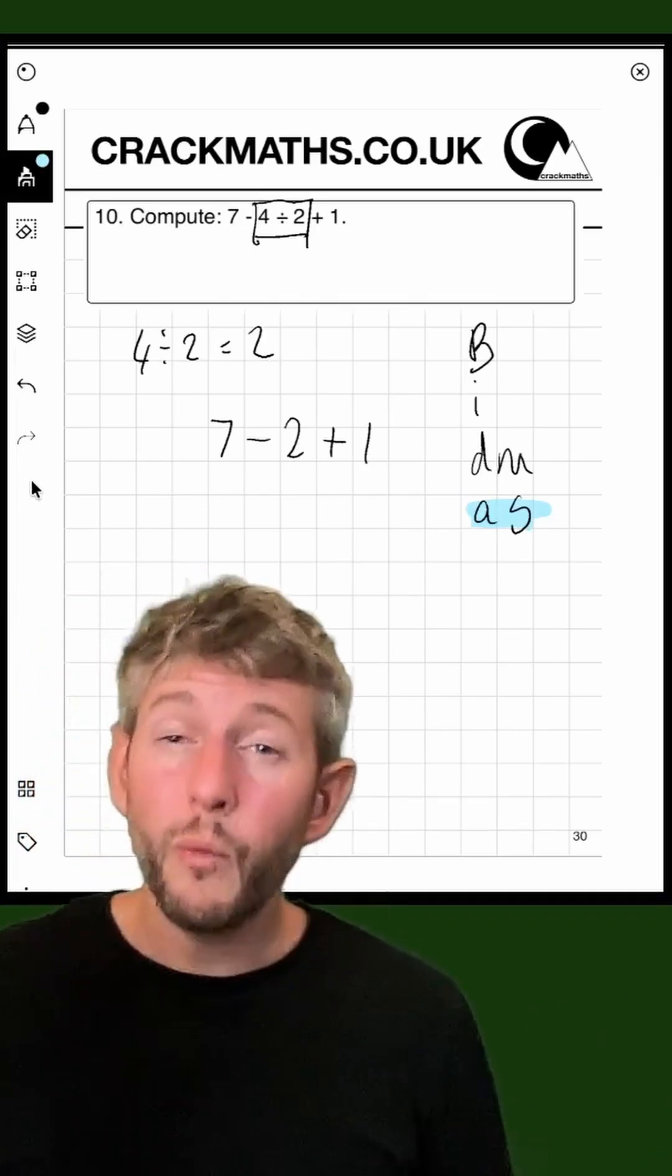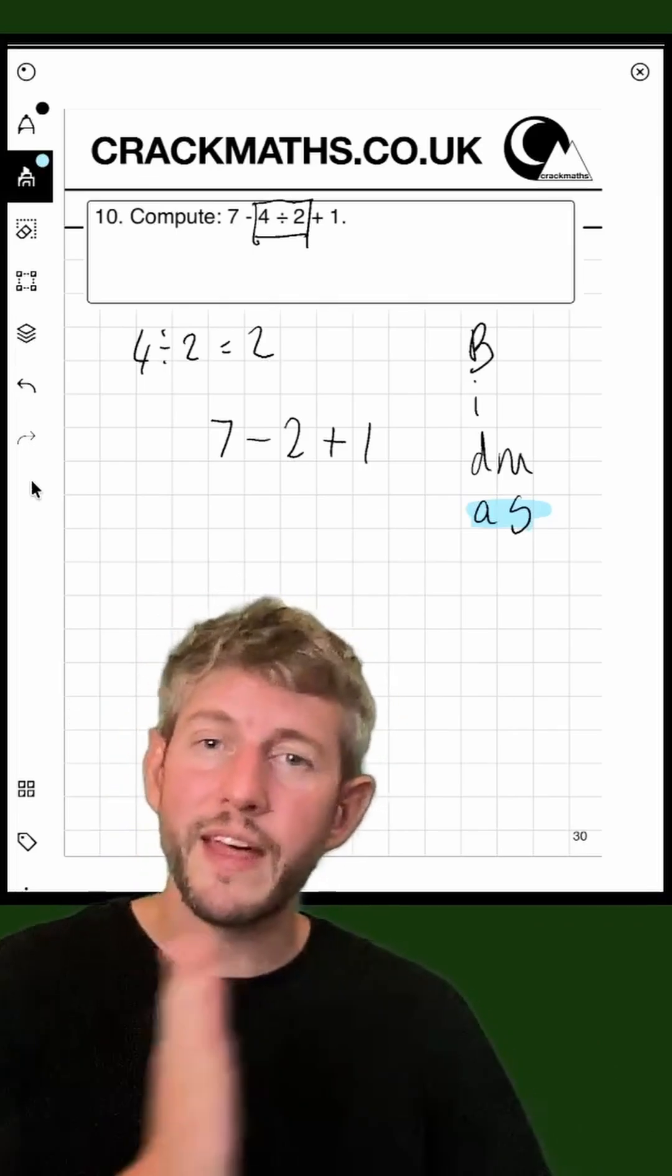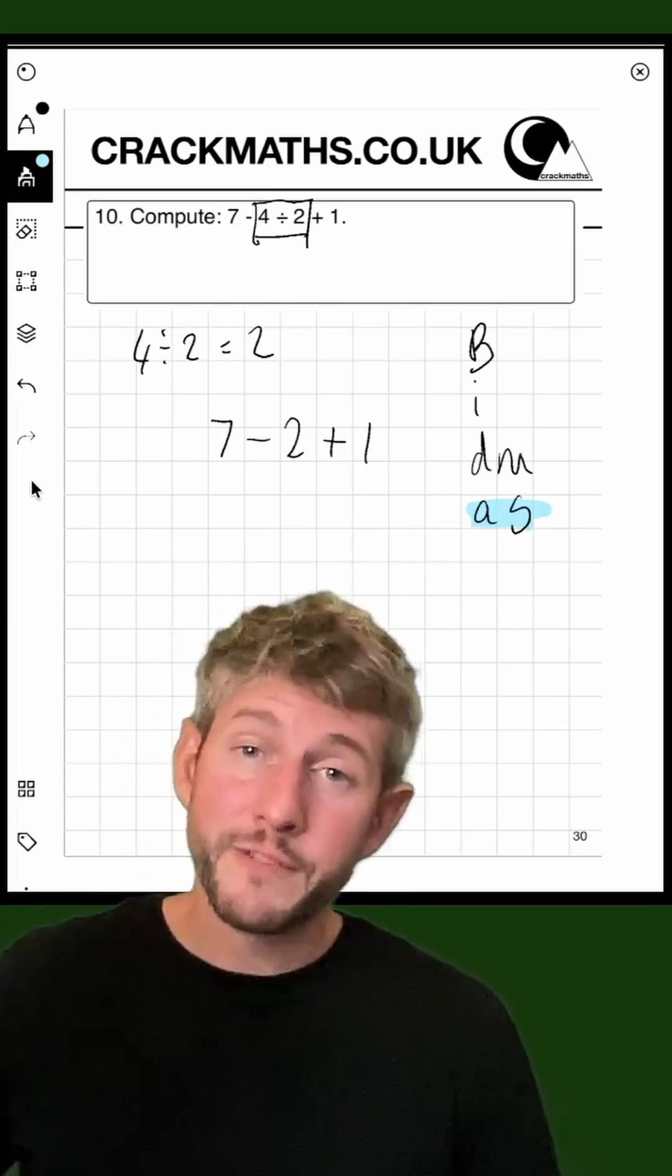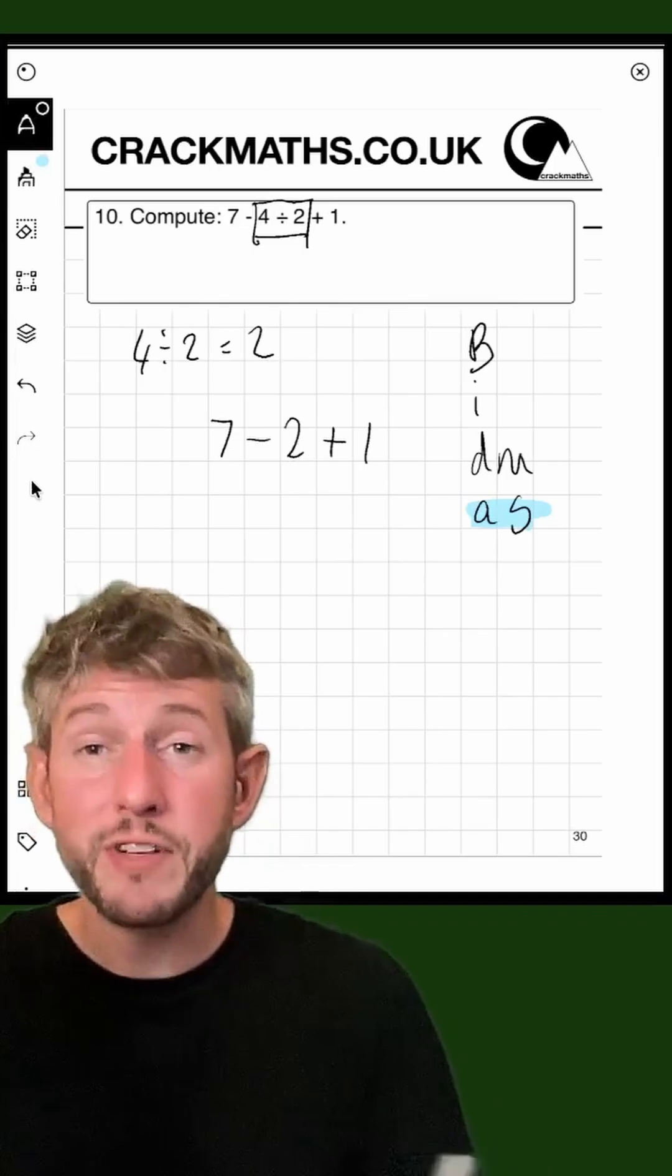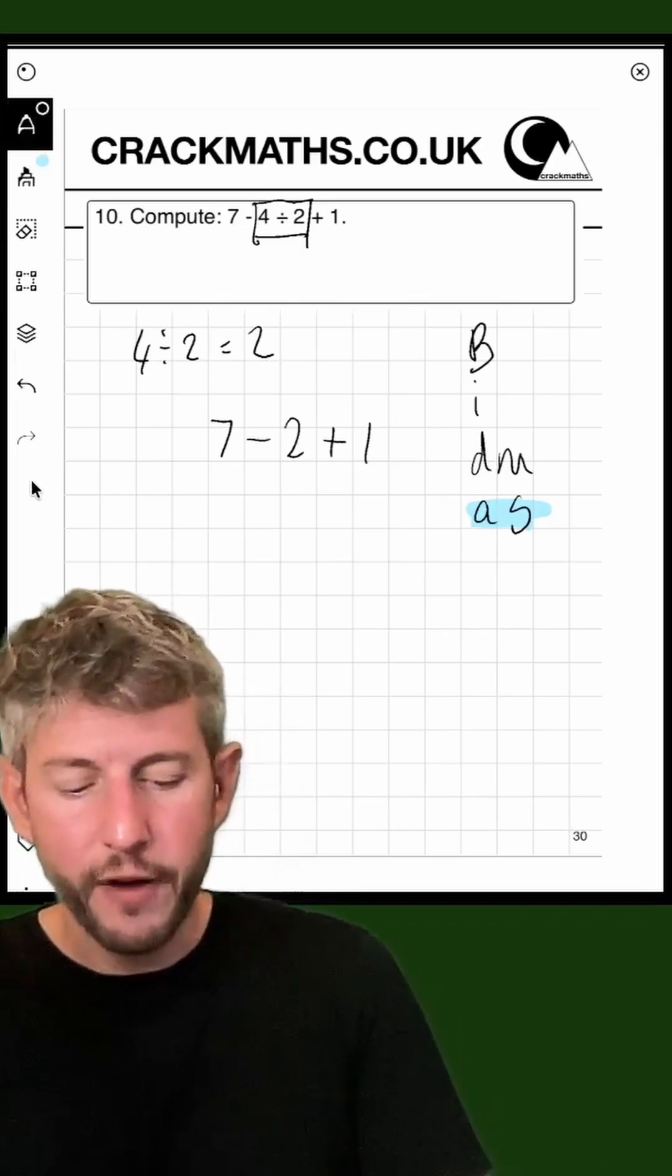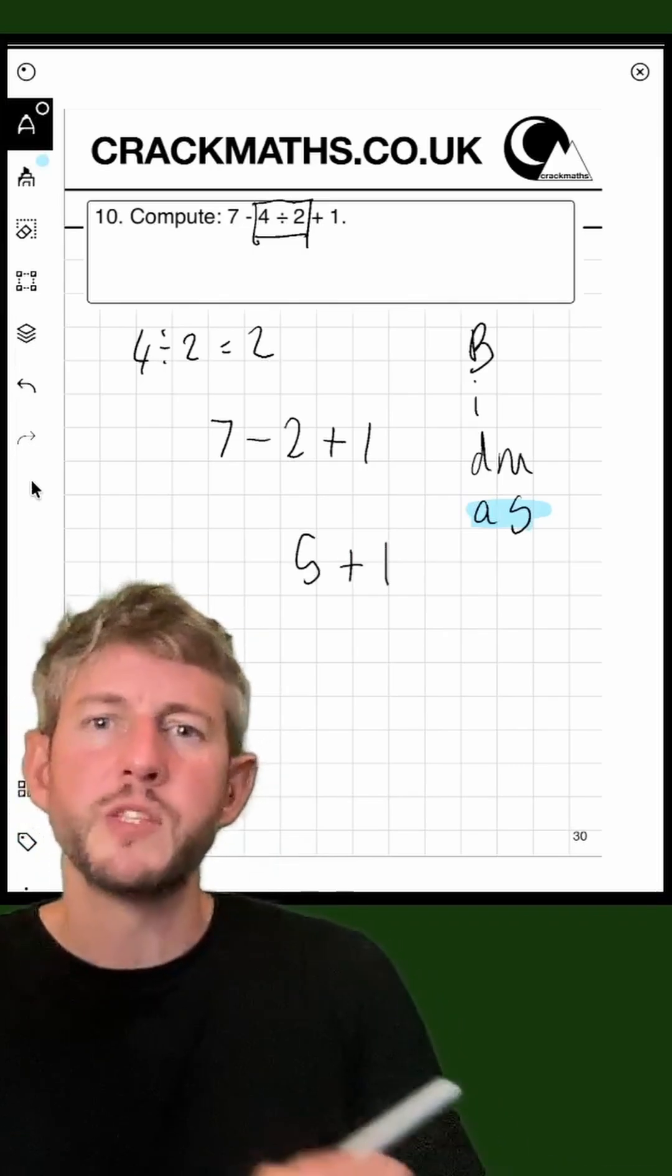When these things get done together, we just do them in the order that they appear, reading from left to right. First, we'll do seven take away two. Seven take away two is five. So this sum becomes five plus one.